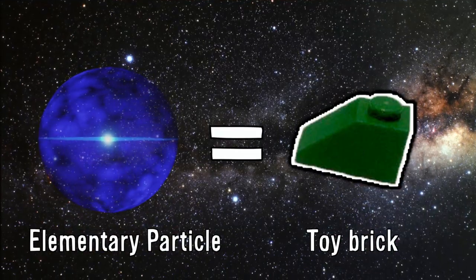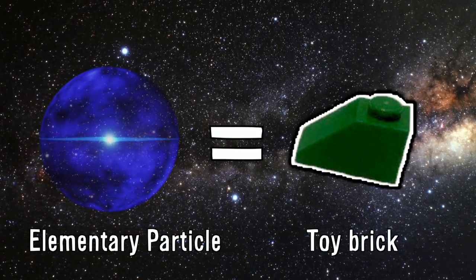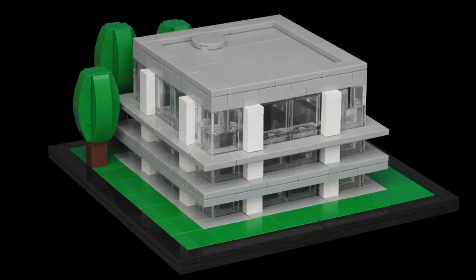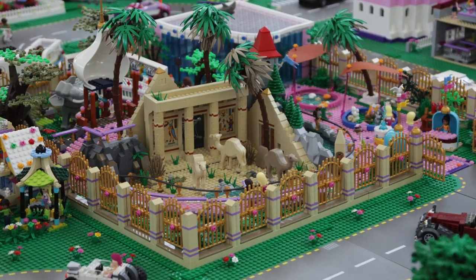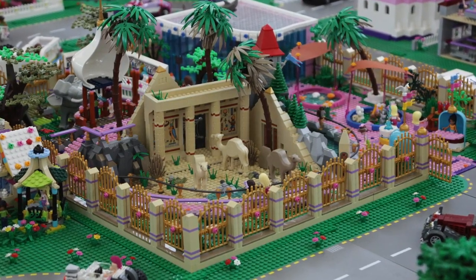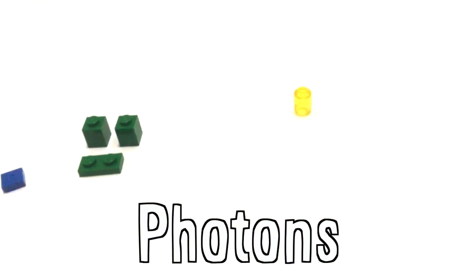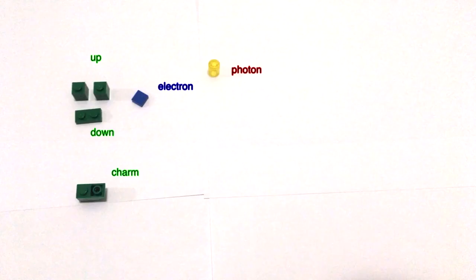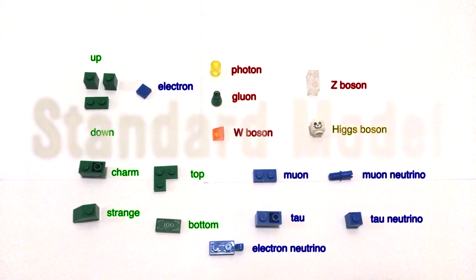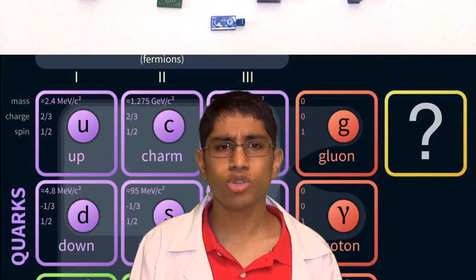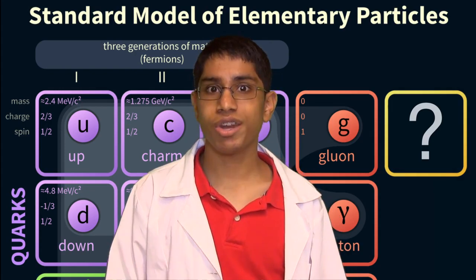An elementary particle is like a toy brick. It can be used to make anything from a small house to an entire city. Familiar elementary particles include quarks, electrons, photons, and a bunch more. This collection is known as the standard model.